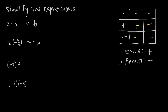Here we switch the order: we have negative 2 and positive 3. The point is we have a negative number and a positive number — different signs — so the result is negative 6. And here we have two negative numbers: negative 2 and negative 3. The signs are the same, both negative, so our result is positive.